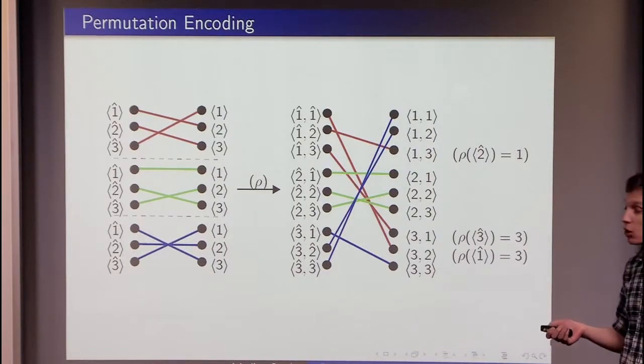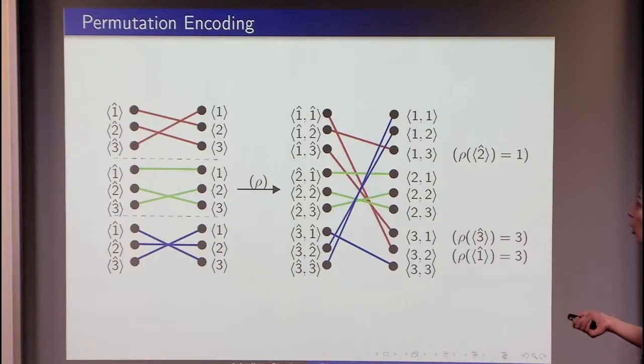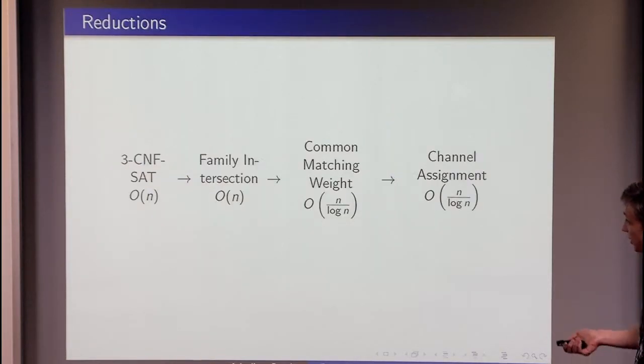If we have k elements, we can encode k log k asymptotically pieces of information. So if we want, for example, to encode n bits, it is sufficient to take big O of n divided by log n elements and take permutations on them. This is the general idea behind this compression here.